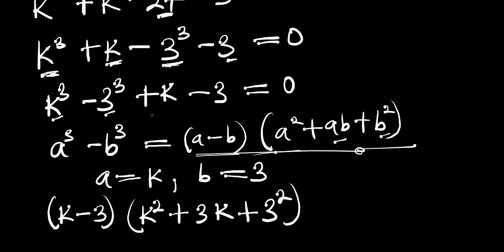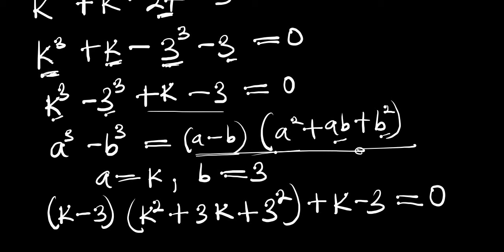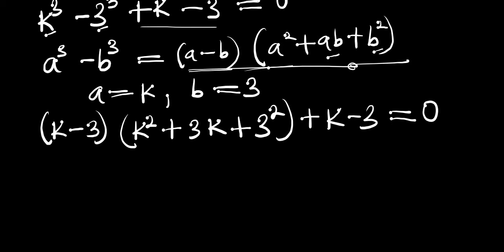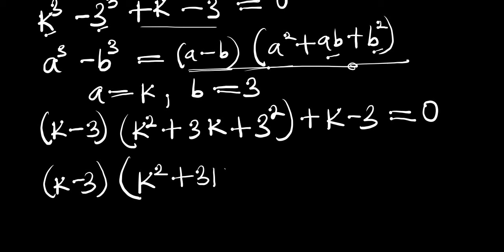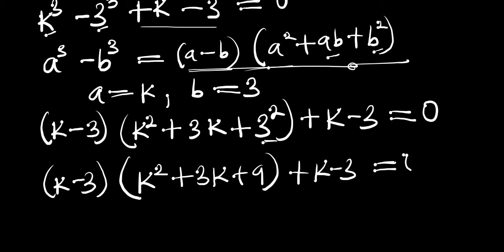Remembering we still have plus k minus 3 equals zero. Rearranging everything, we have (k minus 3) into k squared plus 3k plus 9, and we still have plus k minus 3, and this equals zero.